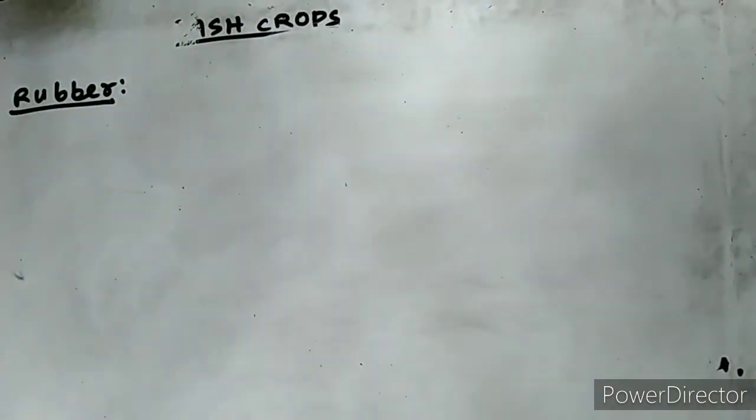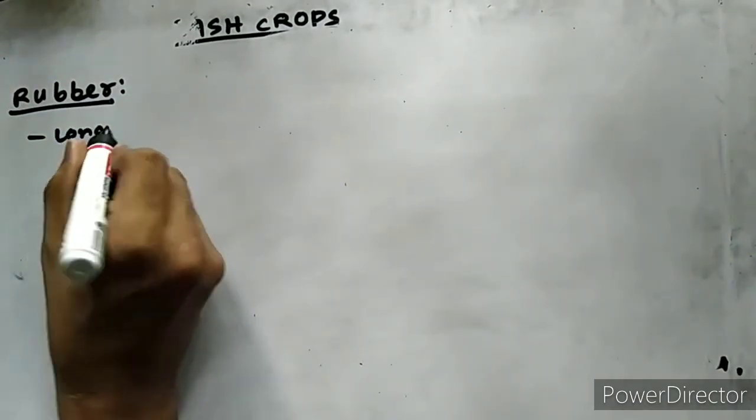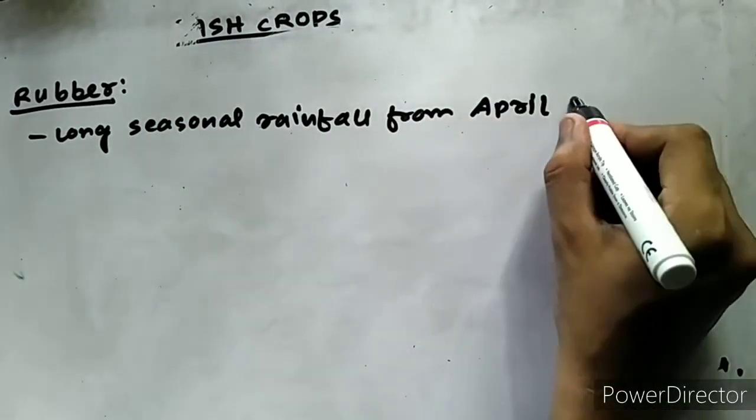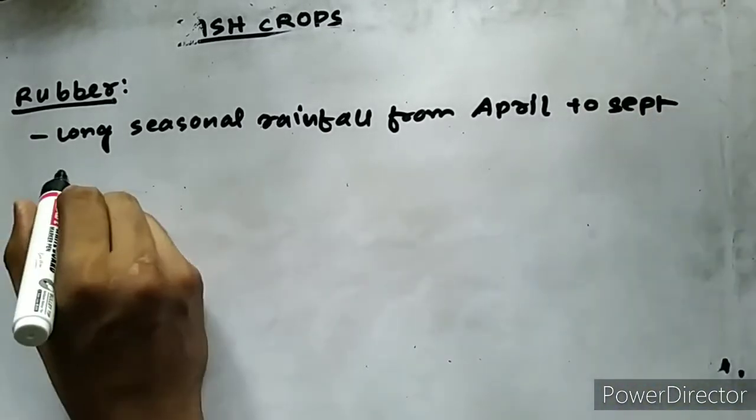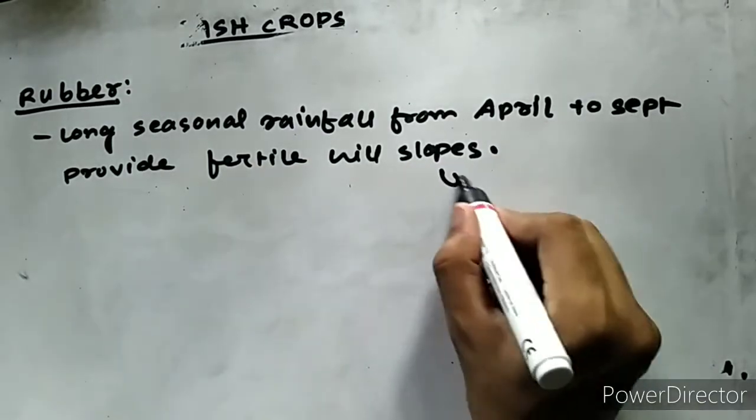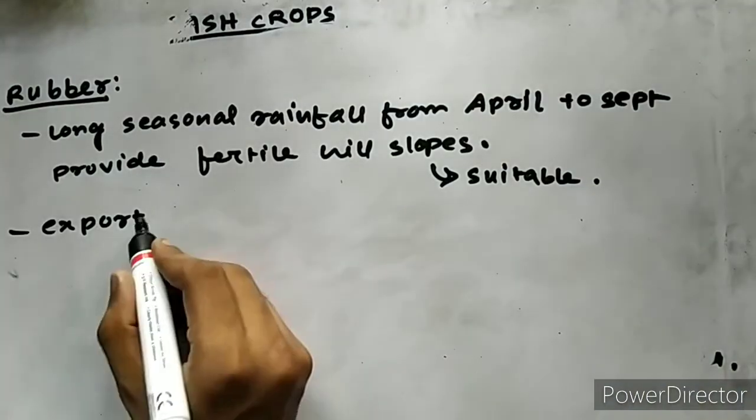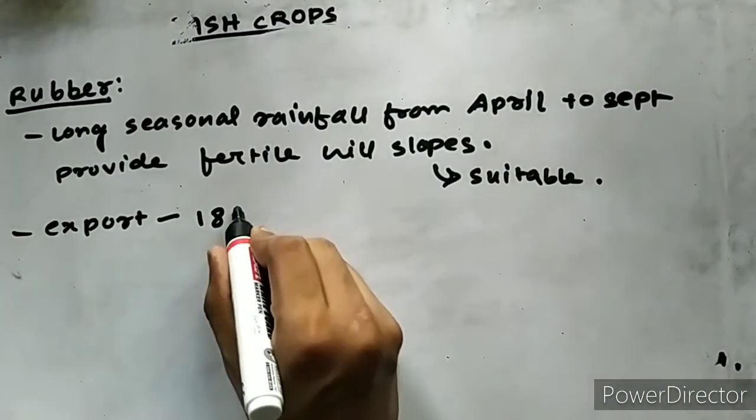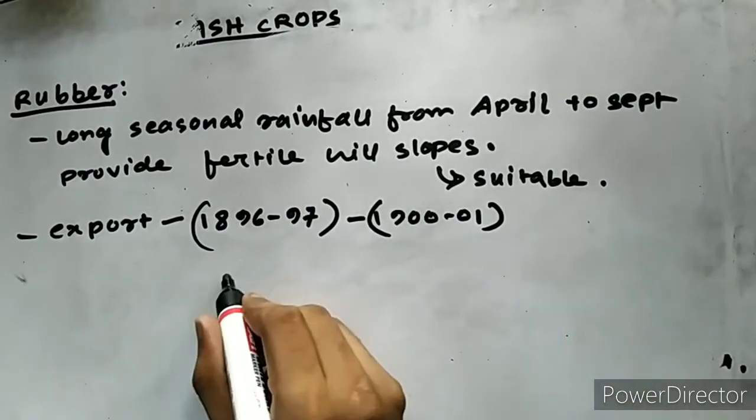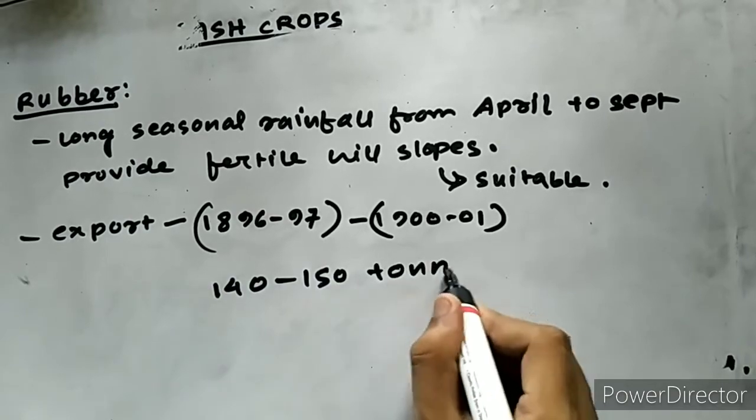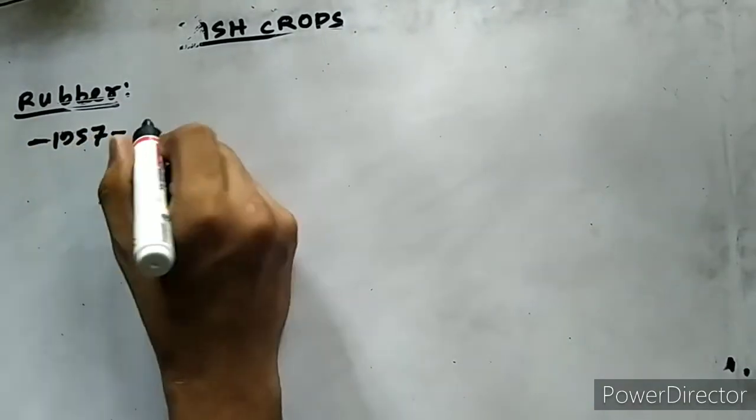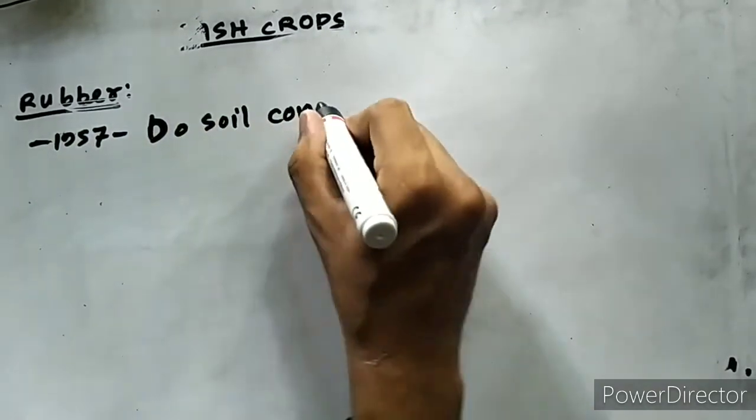The climate and soils of Assam are more suitable for rubber plants. Its long season rainfall from April to late September and the fertile hill slopes provide favorable conditions for rubber trees. Assam used to export natural rubber between 1896-97 and 1900-01 at the rate of 140 to 150 tons annually, but the production went down due to cheap rubber imported from Malaysia and Brazil.